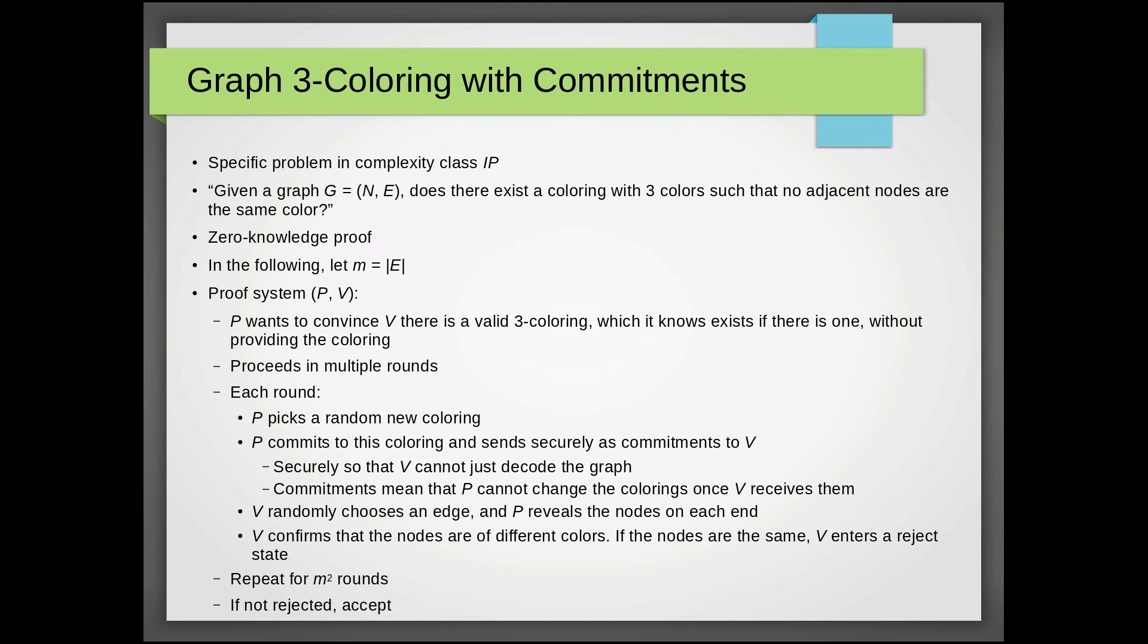So once V has the commitments, what it does is it randomly chooses an edge and asks P to reveal the nodes on each end. Once P does this, V just confirms that the nodes are actually of different colors. If they're the same, you know this graph cannot have a valid three coloring. So V just enters a reject state and says, no, this graph does not have a valid three coloring.